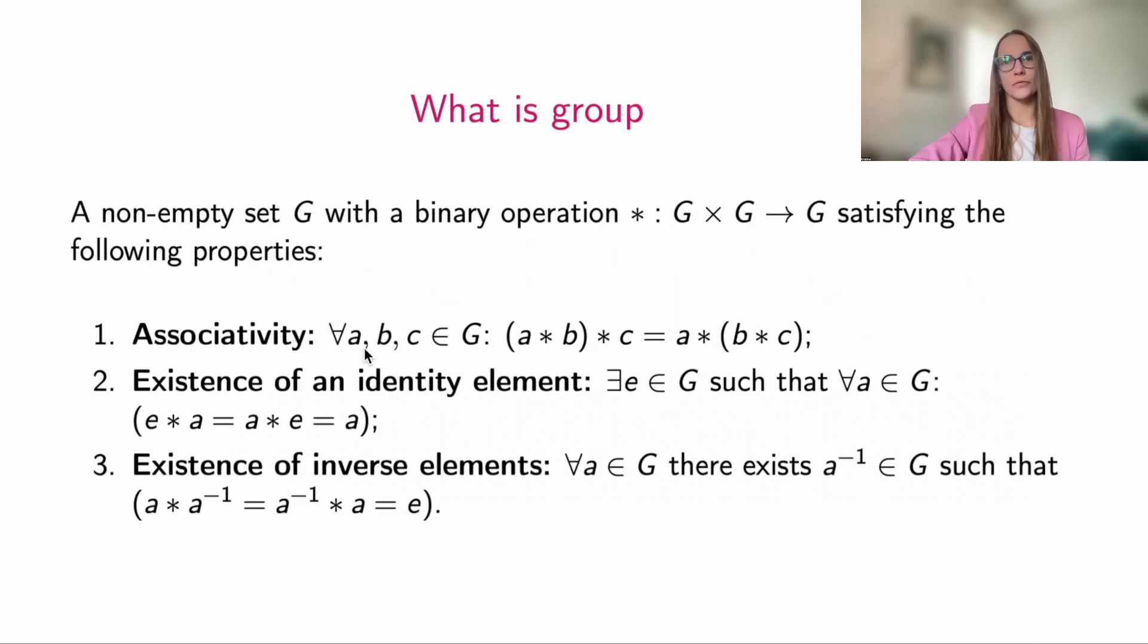Let's recall the definition of a group. A group is a set G equipped with a binary operation, that is a multiplication operation, which satisfies the following properties: associativity, the existence of a neutral element, the identity, and the existence of inverse elements.